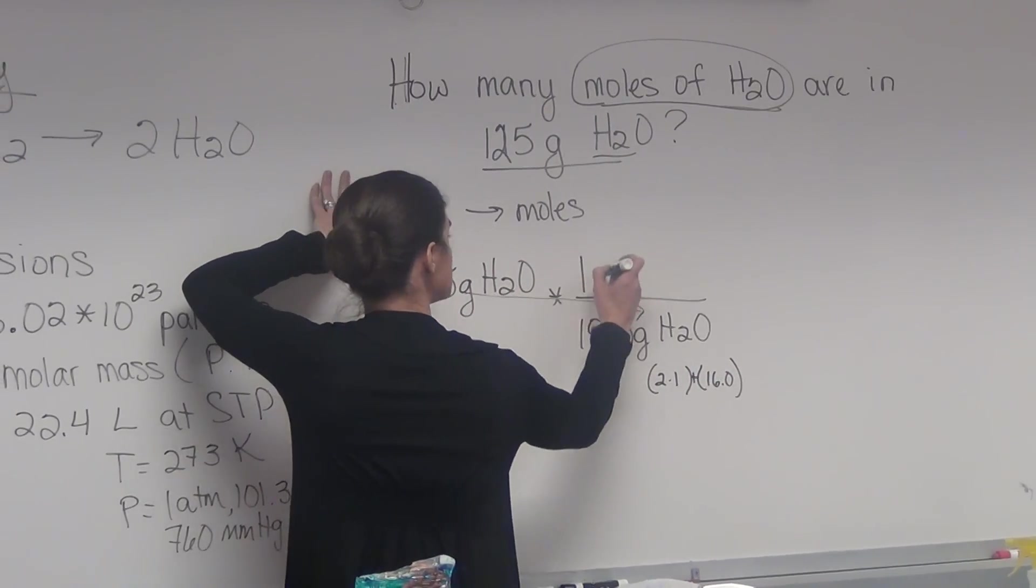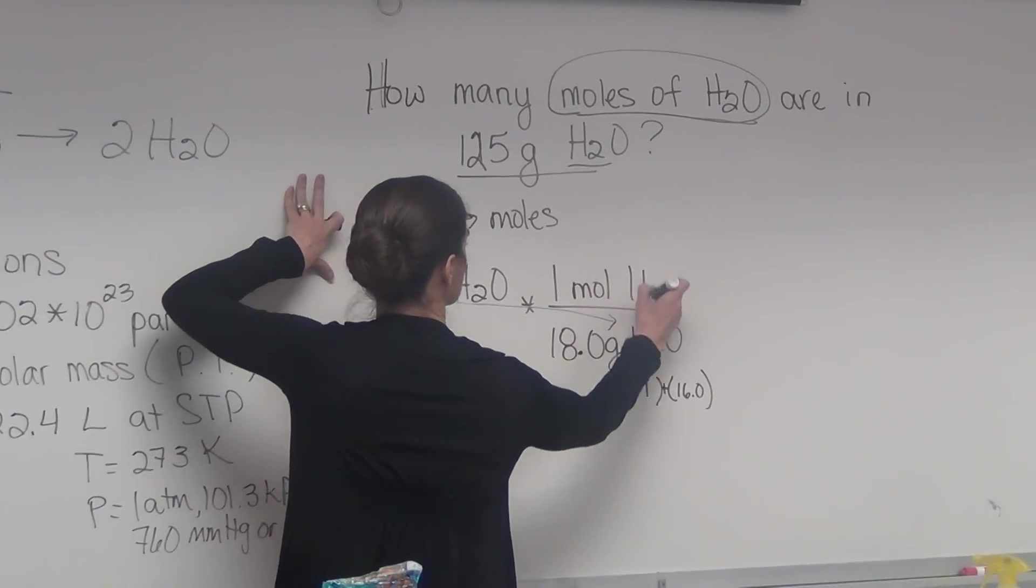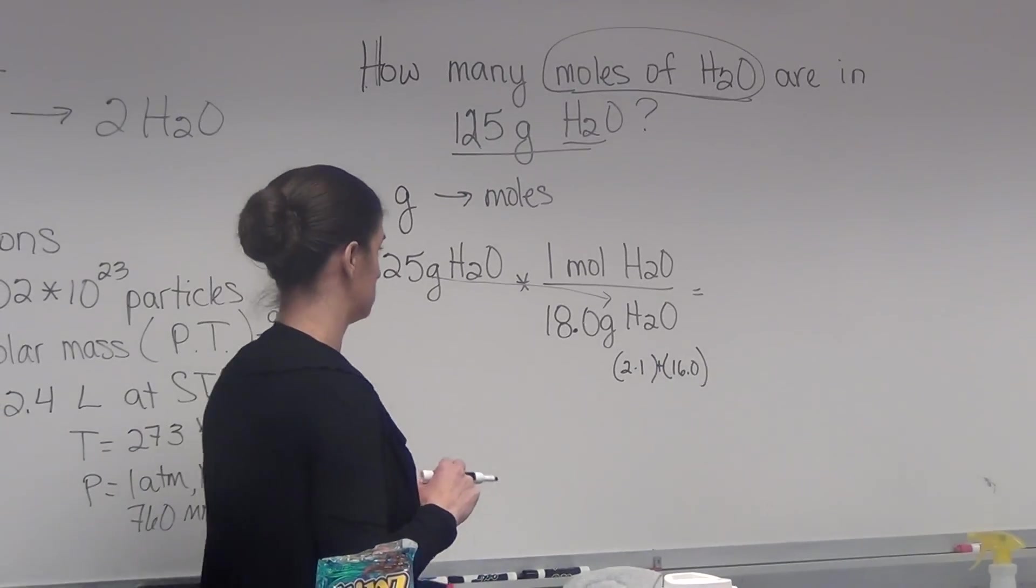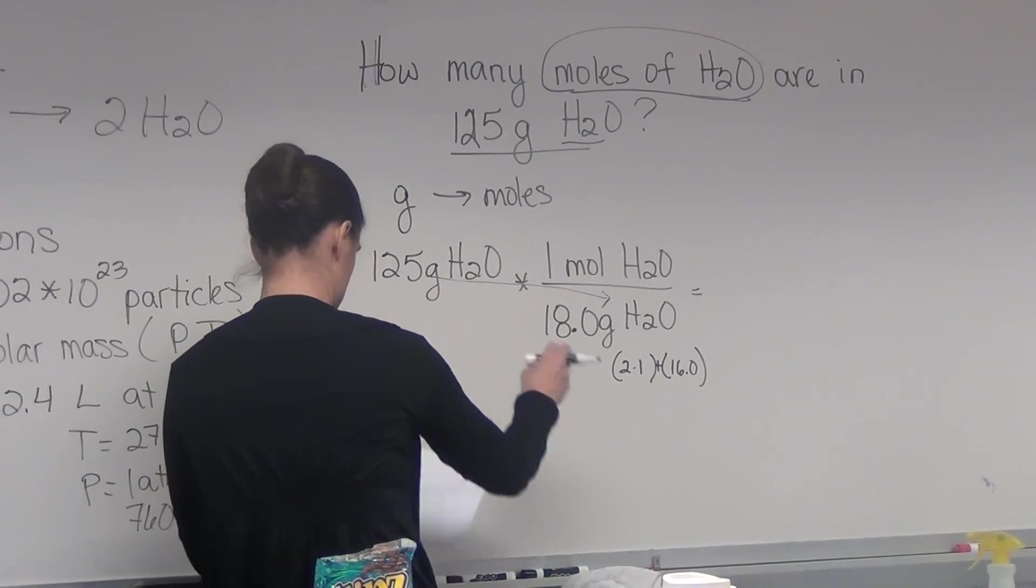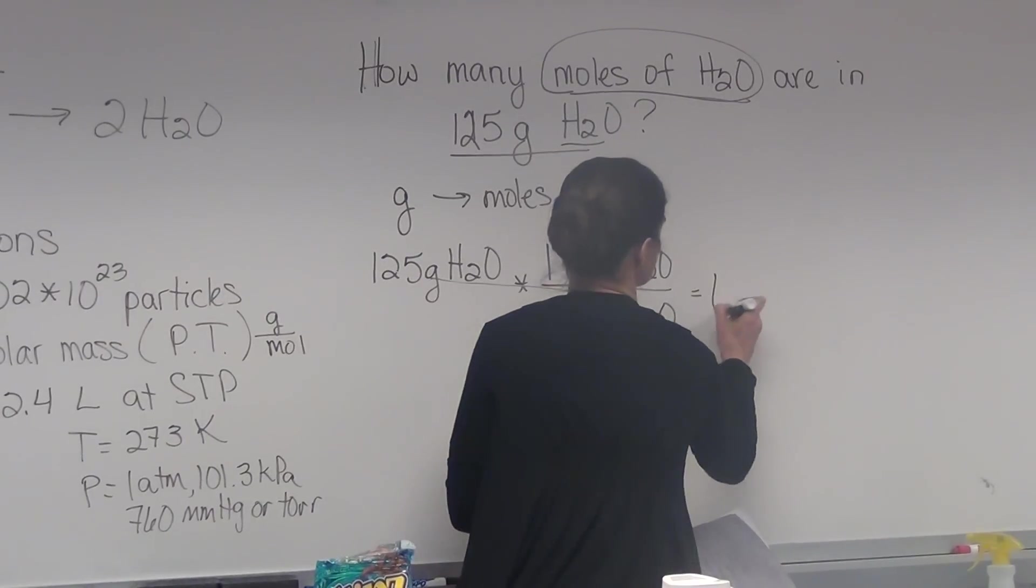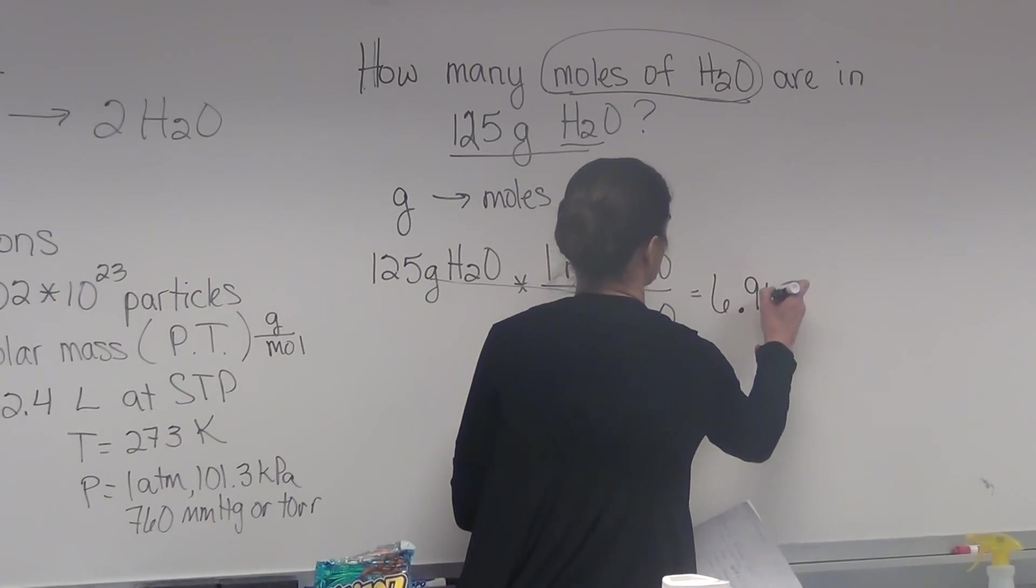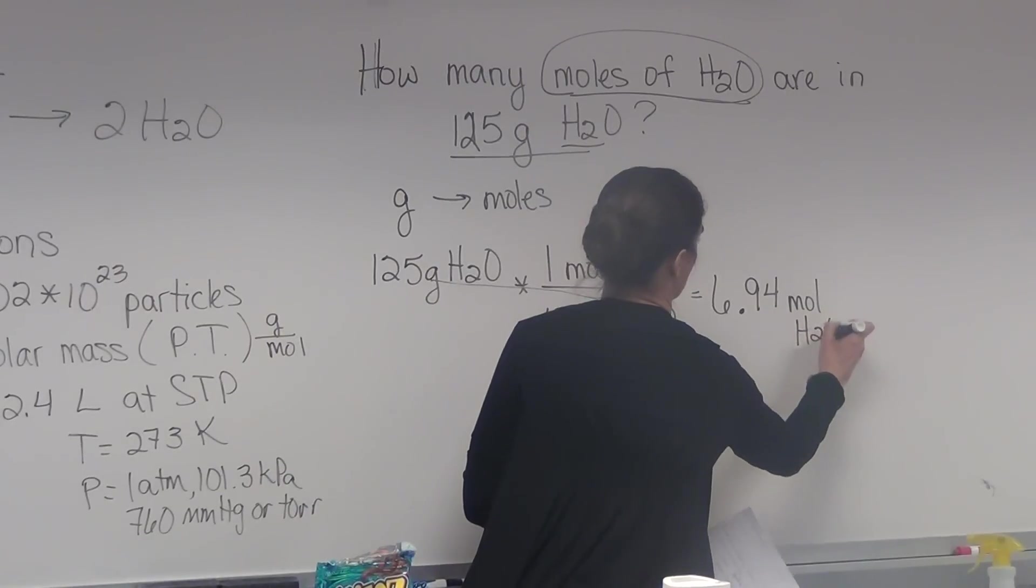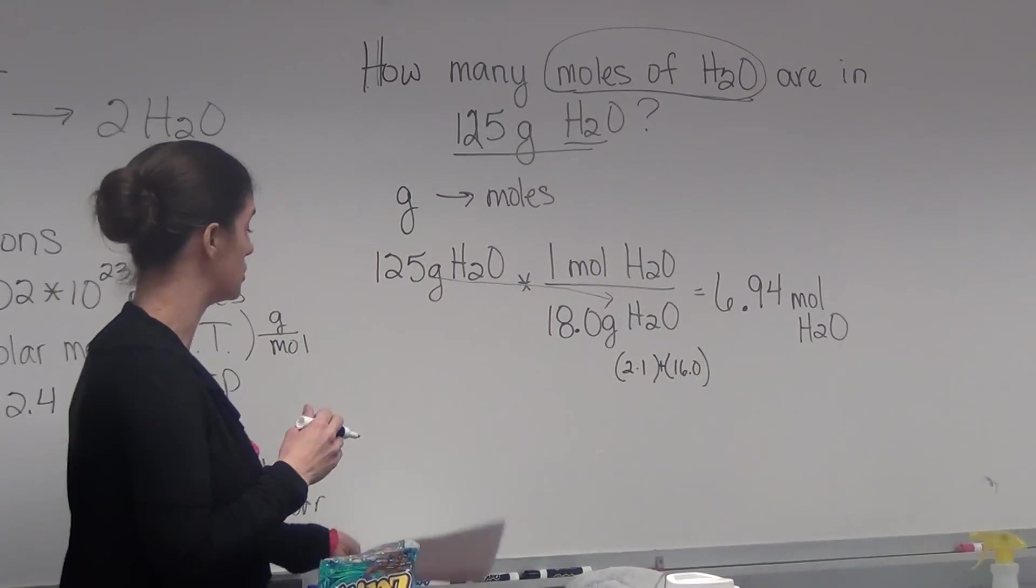18 grams is 1 mole. You put that into the calculator, multiply the top, divide by the bottom, you're going to get 6.94 moles of water. And that's what we already know how to do.